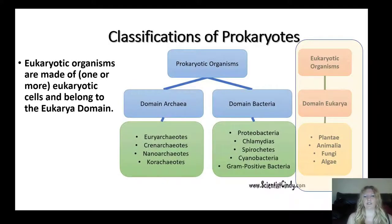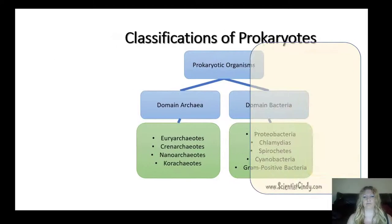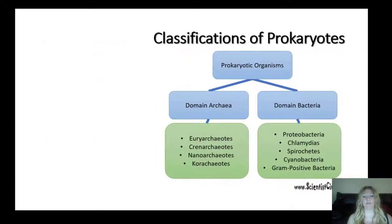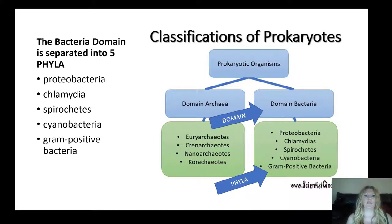Eukaryotic organisms belong to the eukarya domain and are made up of one or more eukaryotic cells. All prokaryotic organisms are composed of a single prokaryotic cell and belong to either the bacteria or archaea domain. The bacteria domain is separated into five phyla: proteobacteria, chlamydia, spirochetes, cyanobacteria, and gram-positive bacteria.